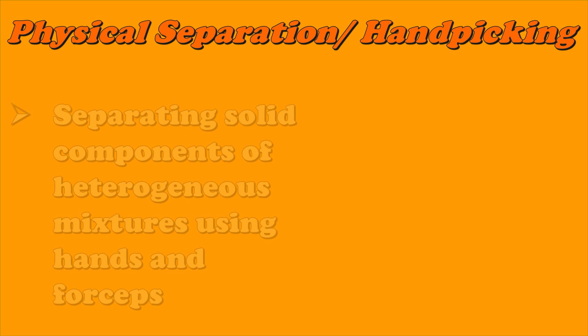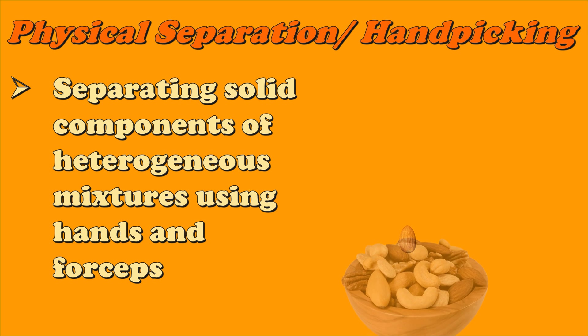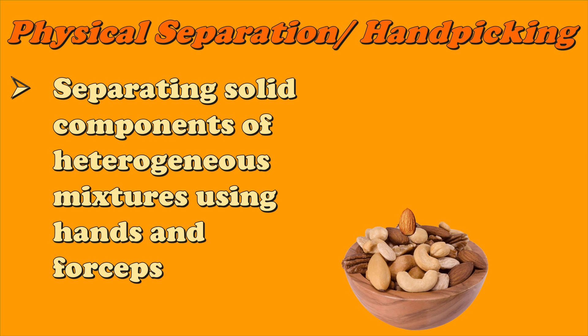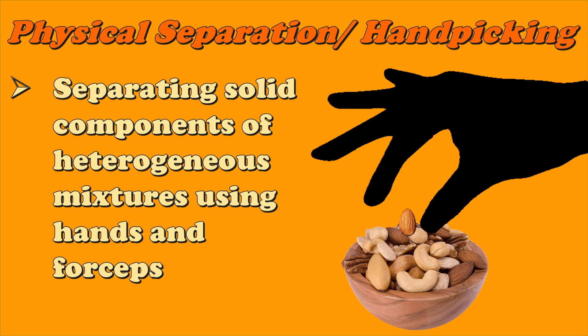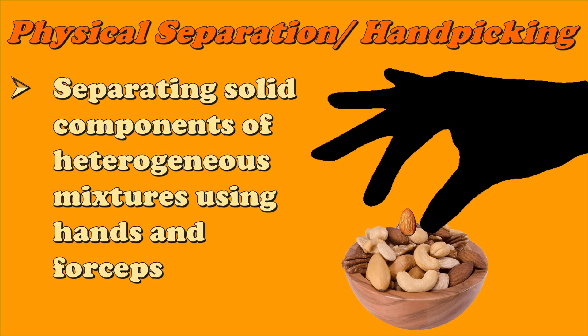Another technique is what we call physical separation or hand-picking. It is a technique used in separating solid components of a heterogeneous mixture. The components should be big enough to be seen and picked by hand or with forceps. When you separate nuts in a mixed nuts assortment, you can separate the components through physical manipulation or by the use of your hands.